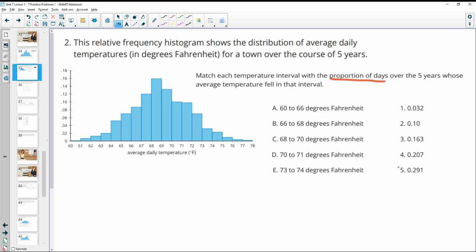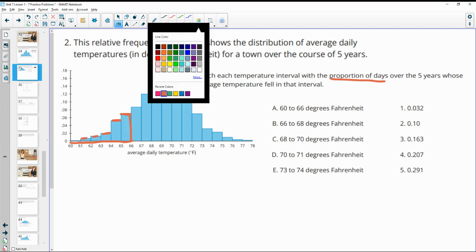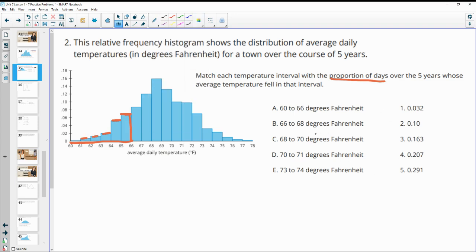We're matching this first data set that goes from 0 to 66, so we would need to add up all of these data points in each of these intervals. We'd have to add this number, this number, this number, this one, and this one to get that. I'm going to wait on that one and look at the rest of them to narrow down my options.